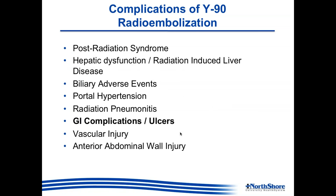This brings up a very important point. Certainly there are many successes associated with Y-90 radioembolization, and its use is only increasing in local-regional therapy for hepatocellular carcinoma. However, we must remember that despite being a very sophisticated technique, there are also some complications to keep in mind. Our presentation focused mainly on GI complications — ulcers within the antrum or other parts of the stomach. Other complications include post-radiation syndrome, hepatic dysfunction, radiation-induced liver disease, biliary adverse events such as bilomas, strictures, radiation cholecystitis, portal hypertension, radiation pneumonitis, vascular injuries, and anterior abdominal wall pain from misdirection through the falciform artery.